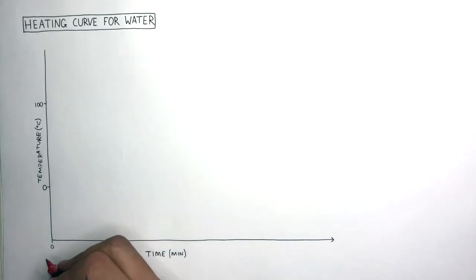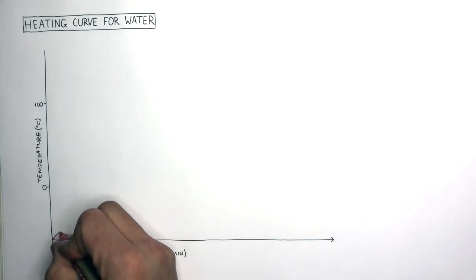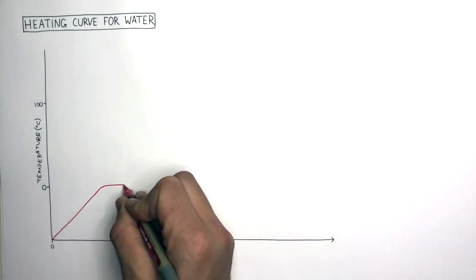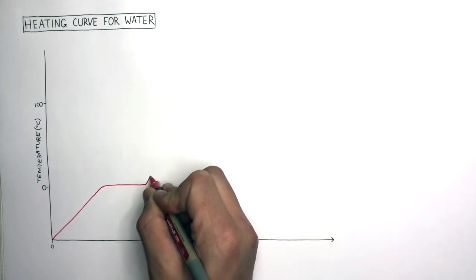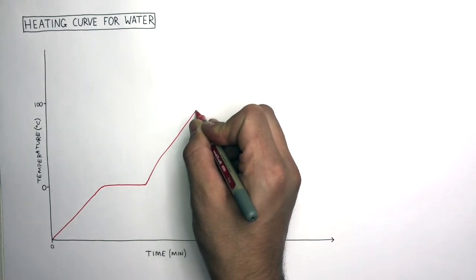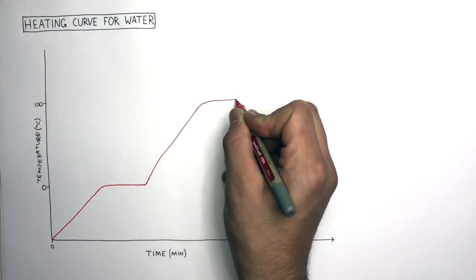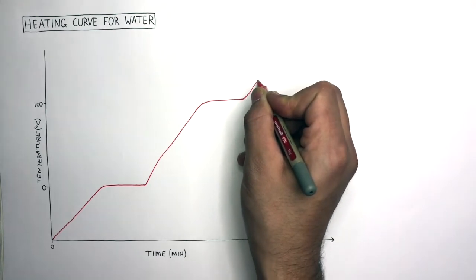Describing how the temperature of the water changes as it's heated: initially the temperature is increasing. Eventually the temperature starts to remain constant, and then after a couple of minutes the temperature starts to increase again. After a while the temperature reaches a point where it remains constant again, and then starts to increase once more.